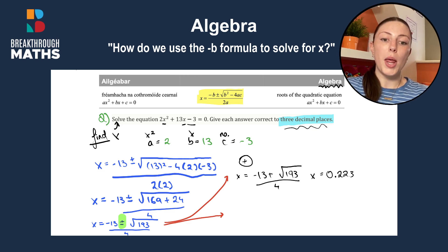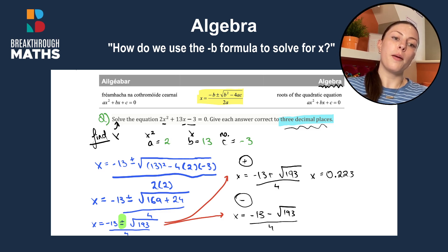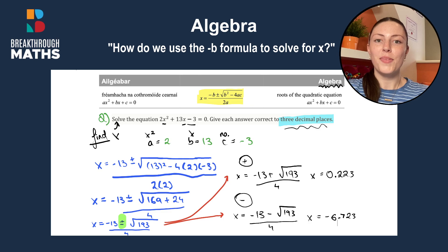Then when we use the minus option, so when x is equal to minus 13 minus the square root of 193 divided by 4, you get x is equal to minus 6.723. Again, to three decimal places. And that's how you solve for x using the minus b formula.